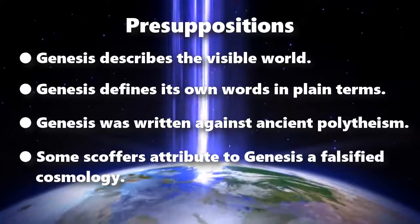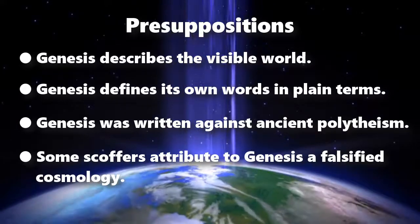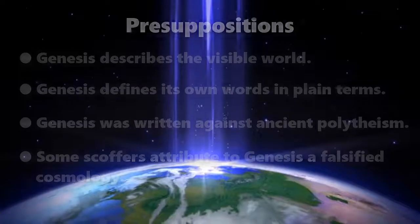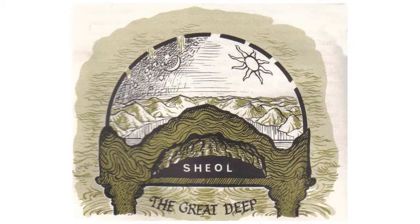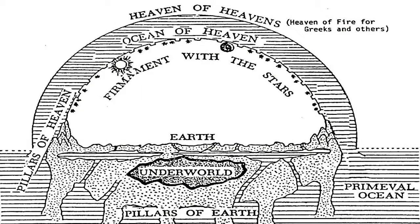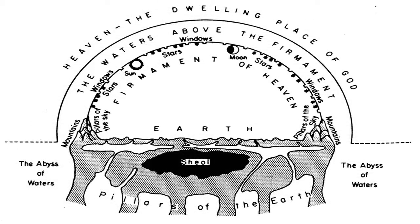Some scoffers attribute to Genesis a falsified cosmology. In our schools they taught us a contrived Hebrew cosmology that has a firmament — a solid sky or dome with holes in it to let rain fall to earth. However, that cosmology has two main problems. First, the Hebrews never believed in such a scheme. And, second, the language of Genesis 1 and 7 does not describe such a scheme.